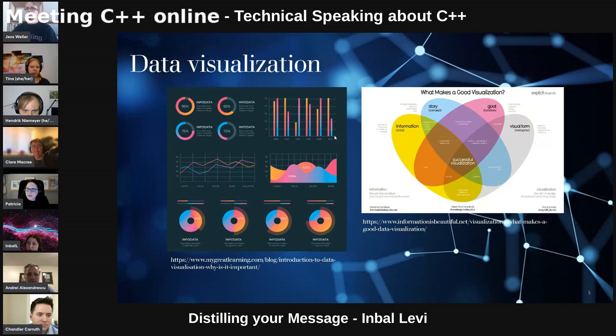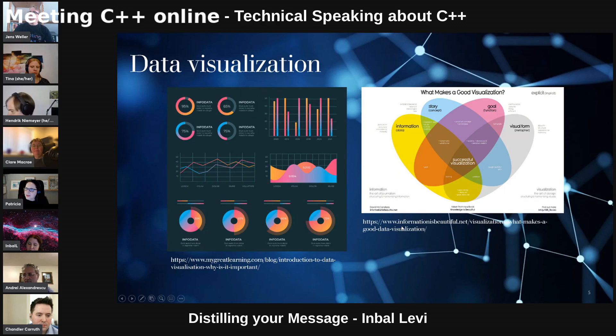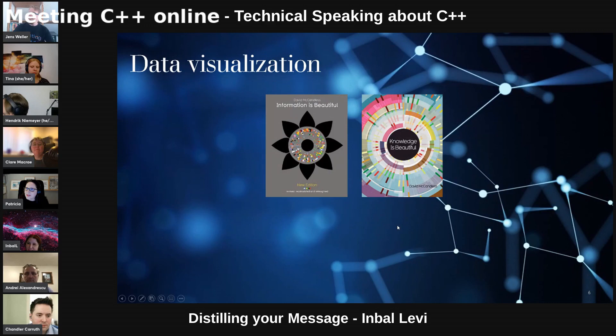Here on the right, you can see a meta picture — it's a picture that talks about good visualization. This is actually coming from a very cool book called 'Information is Beautiful.' There are two of them, as far as I know, and I would highly recommend them — I'm not connected to the author in any way, but those are really awesome books. One is called 'Information is Beautiful,' the second is 'Knowledge is Beautiful,' and they talk about how to express information in a visual way.